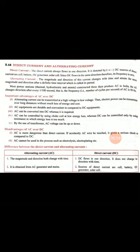Direct current always flows in one direction. It is denoted by an arrow symbol. Sources of direct current are cell, battery, DC generator, and solar cell. Since DC flows in the same direction, its frequency is zero.